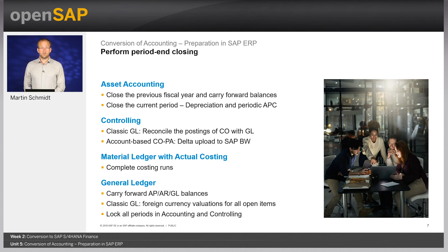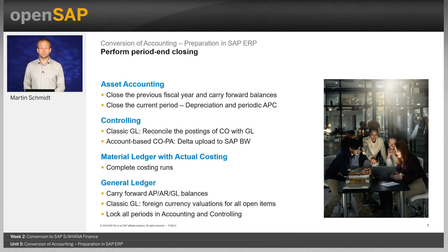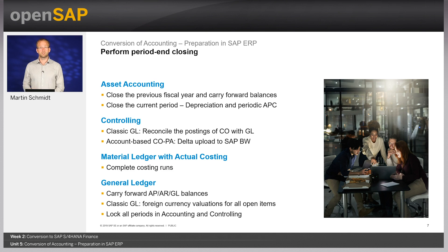As one of the last preparation steps, you execute the financial close. There is no requirement to execute conversion at the beginning of a fiscal year — it can be performed any time during the current year. However, the previous fiscal year must be fully closed, which is especially relevant for asset accounting: after conversion to SAP S4HANA, you are not allowed to reopen a previous fiscal year and post any adjustments. You need to carry forward all balances in all applications and ledgers to the current fiscal year.